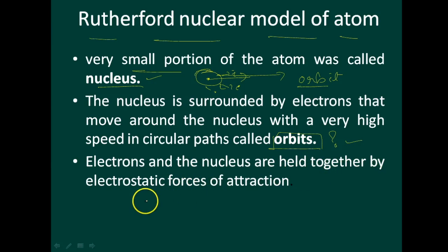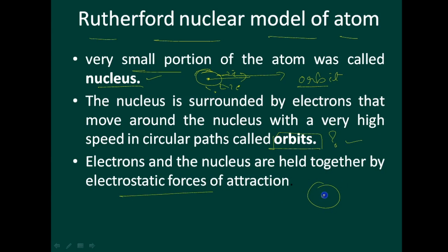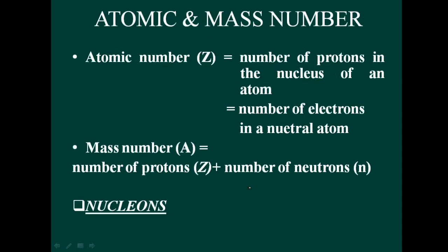Electrons and the nucleus are held together by electrostatic forces of attraction. Between the electron and the nucleus, there is an electrostatic force of attraction. So now the two models are complete — the Thomson atomic model and the Rutherford nuclear model, along with the Rutherford scattering experiment.